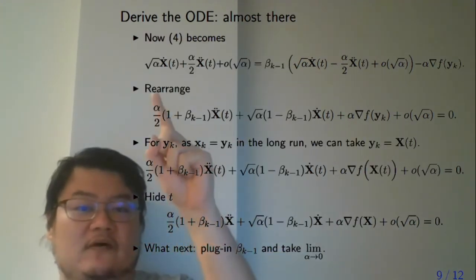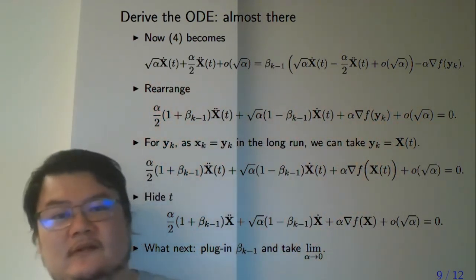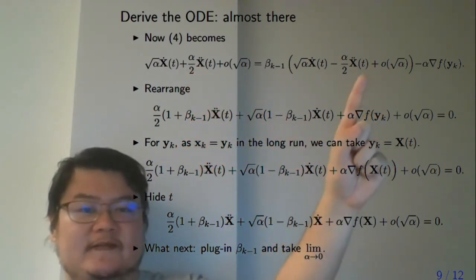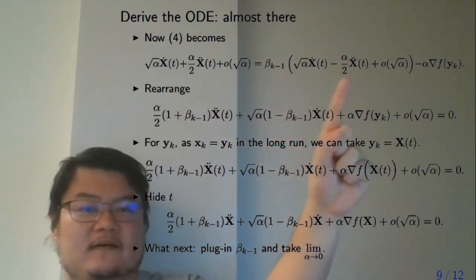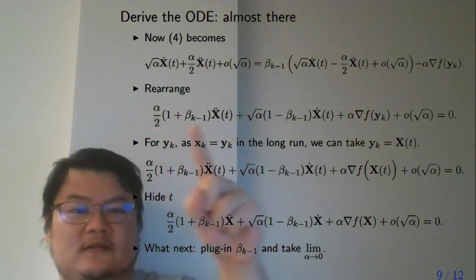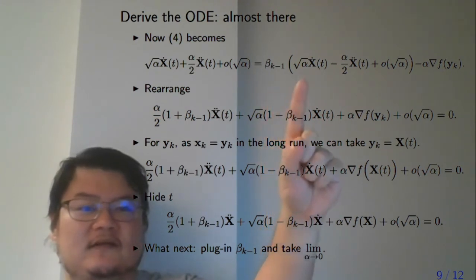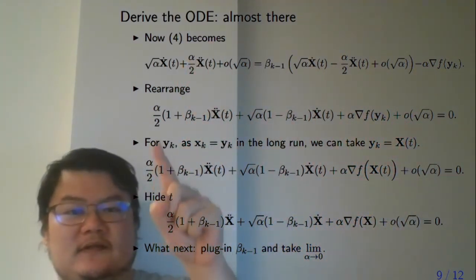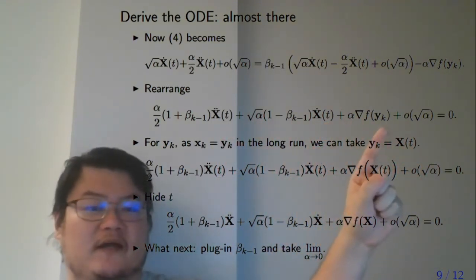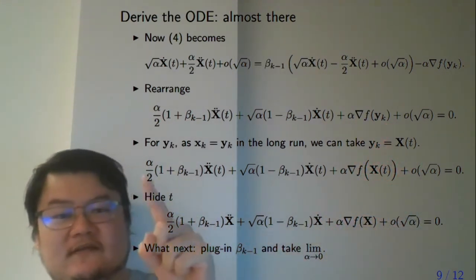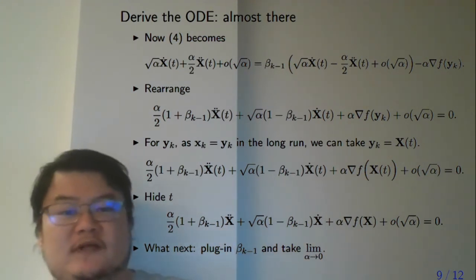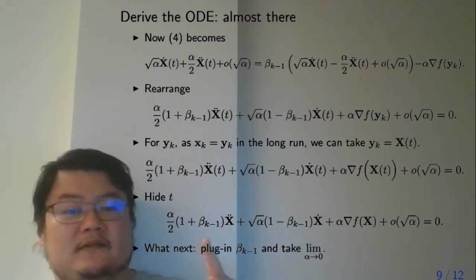The finite difference equation now changes to this long expression. We rearrange by grouping similar terms. The second-order terms combine, the first-order square root alpha terms combine, and one term moves to become an addition. In the long term, y is just x, so you can replace y with x. You get this compact expression. Now we have an ODE, but we are not yet finished — we need to plug in beta to see the compact form, and we also need to remove remaining alpha terms by taking alpha to 0.